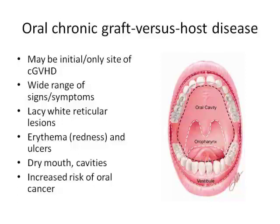GVHD in the mouth may actually be the initial site of presentation — it's not uncommon. We don't really know how predictive that is for what's going to happen next. There's a really wide range of symptoms. Someone may say their mouth feels kind of rough inside, or when they eat it feels tight, especially towards the corners of the mouth. Others may experience sensitivity or notice blisters in the mouth. The most classic finding is these lacy white reticulations — almost like a spiderweb pattern — along with erythema, or redness, and ulcers where tissue has broken down.